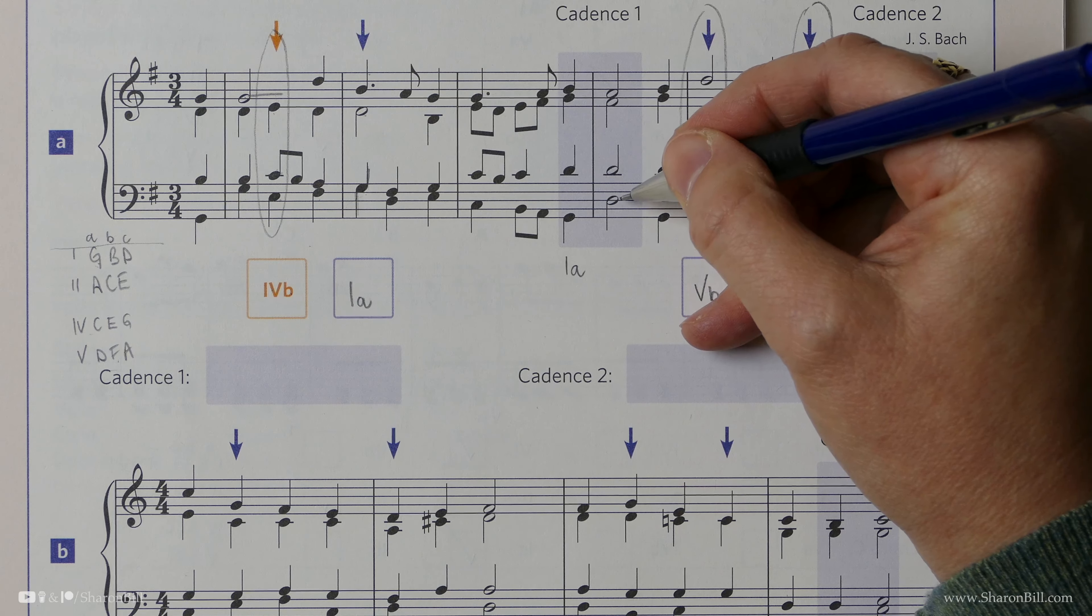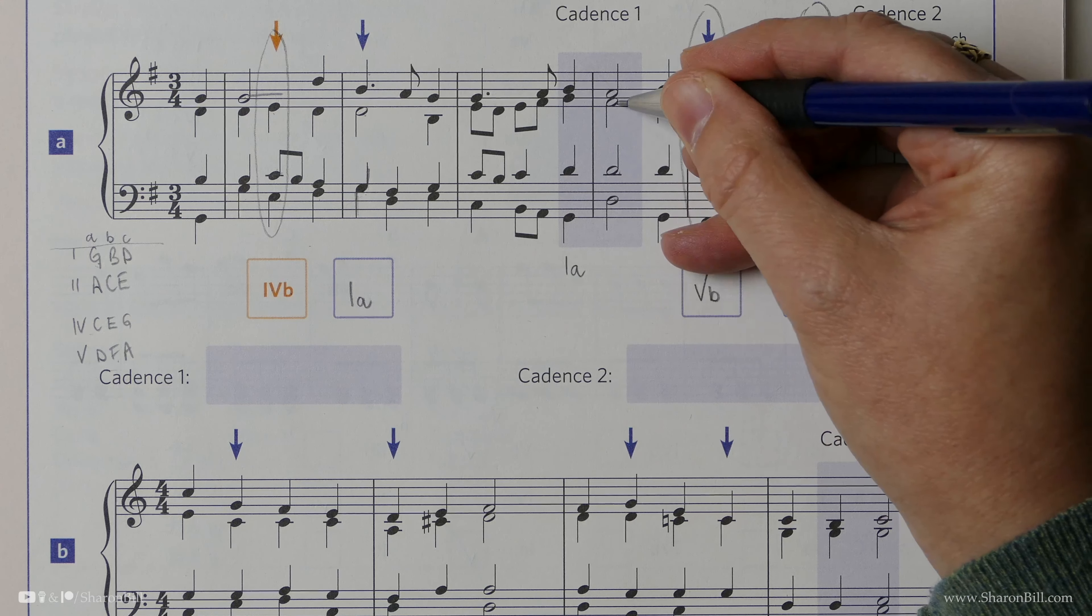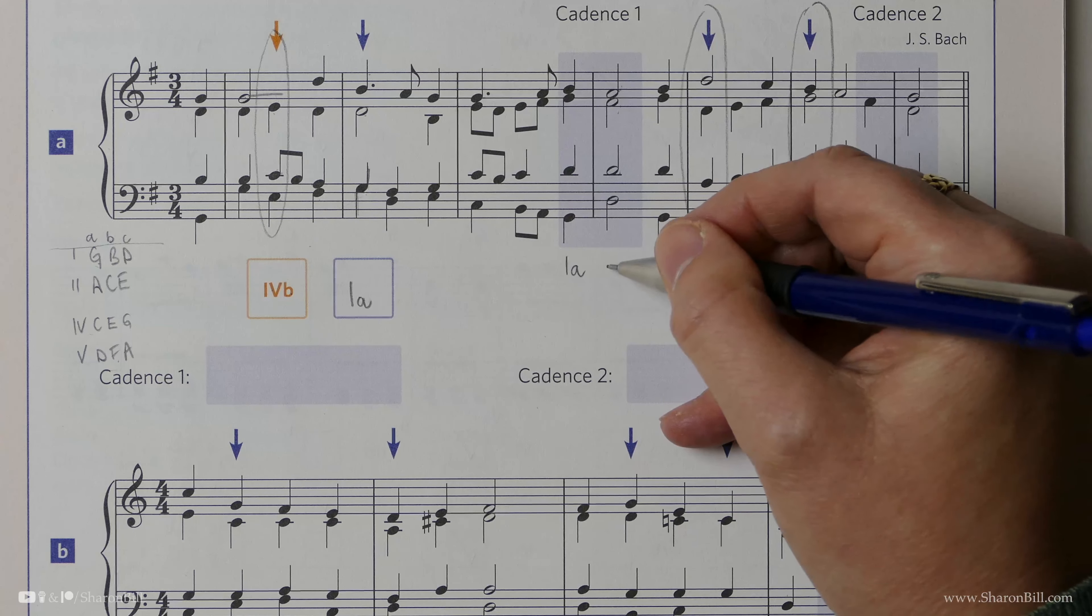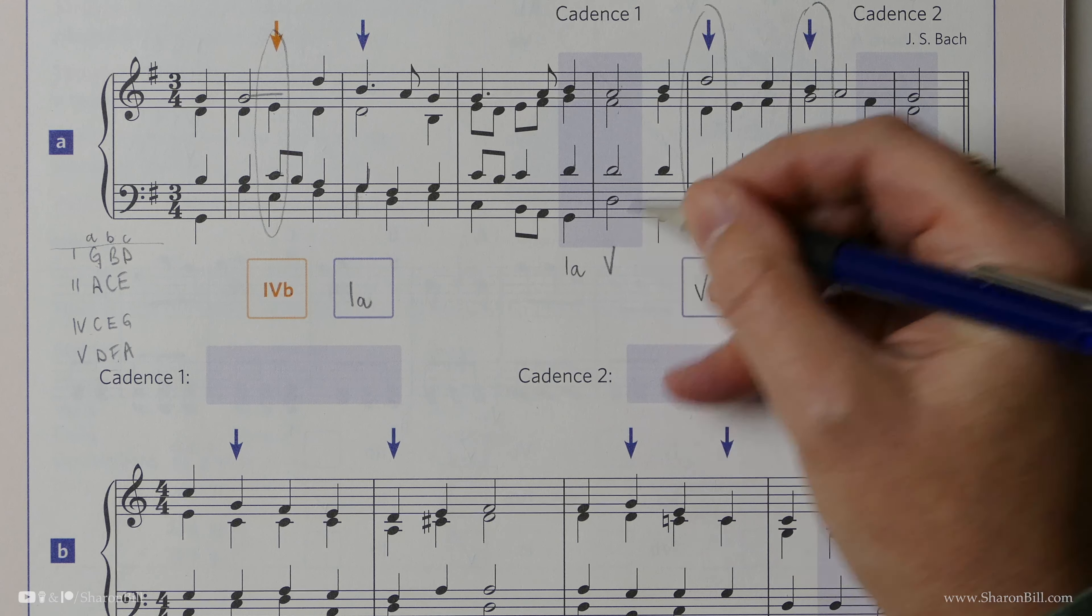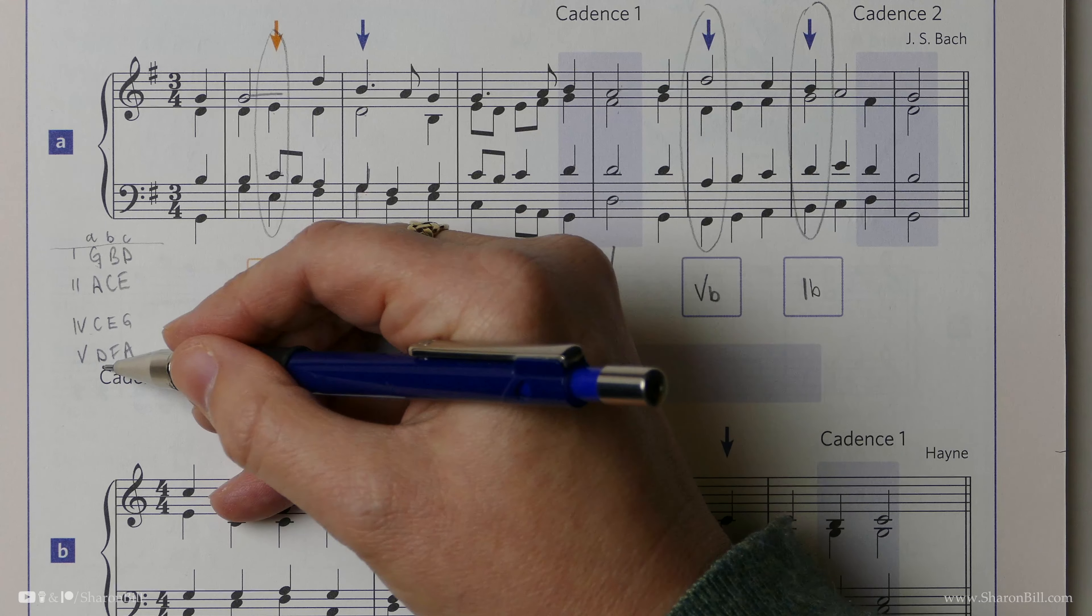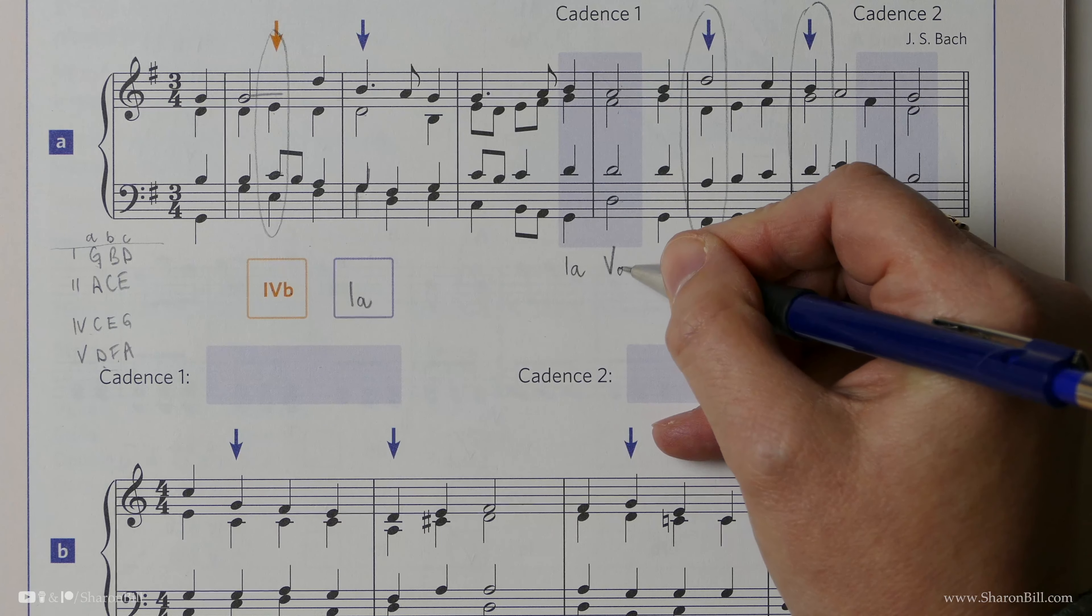And then here, we have D, D, F, A. F sharp, of course. Key section deals with that. That's a chord 5. We don't need to say much else, but we can do. We can say that the D is the bass note. We're in the root position again. So that's a 5A.